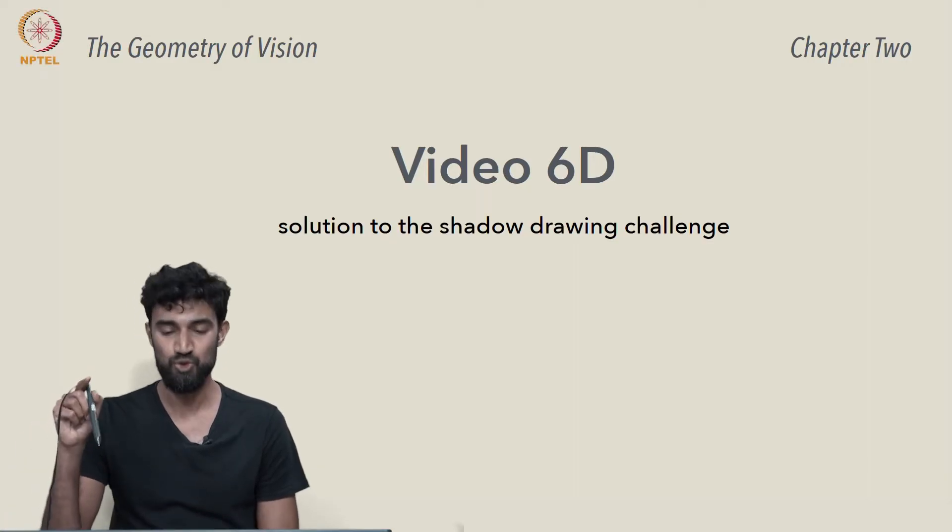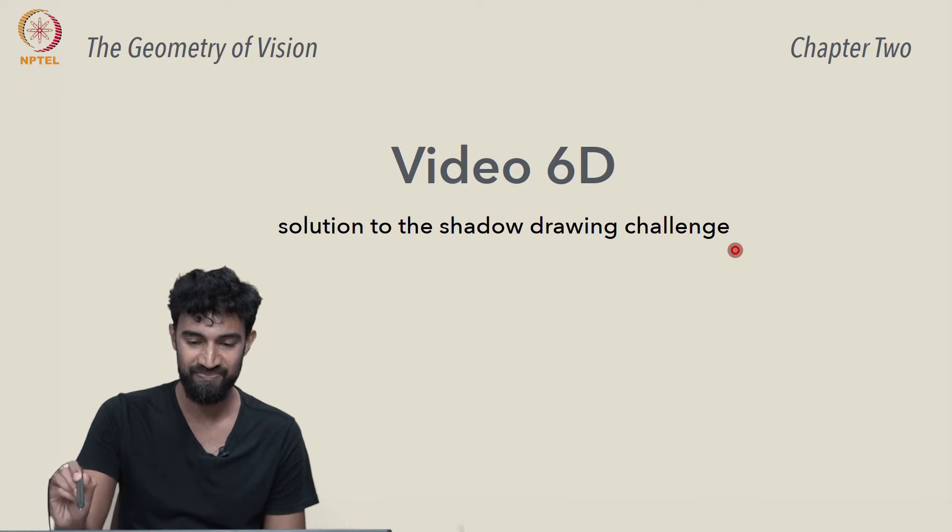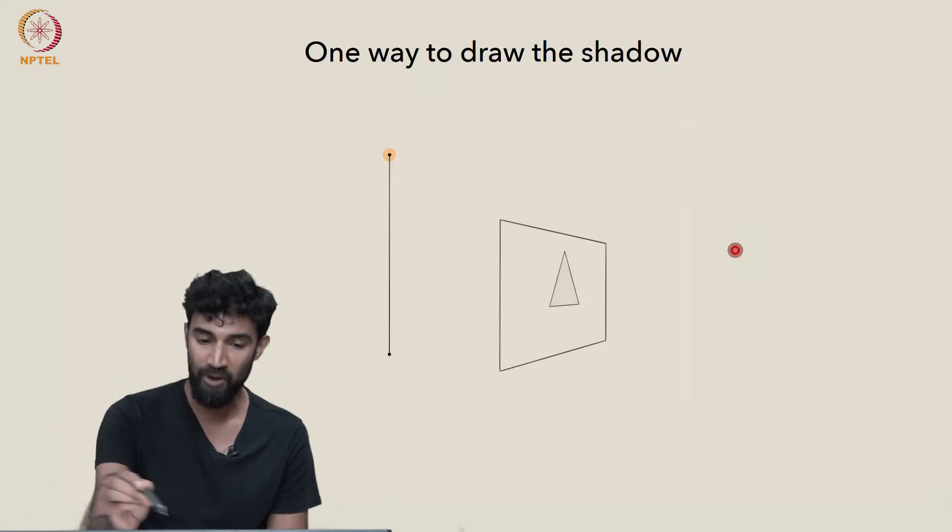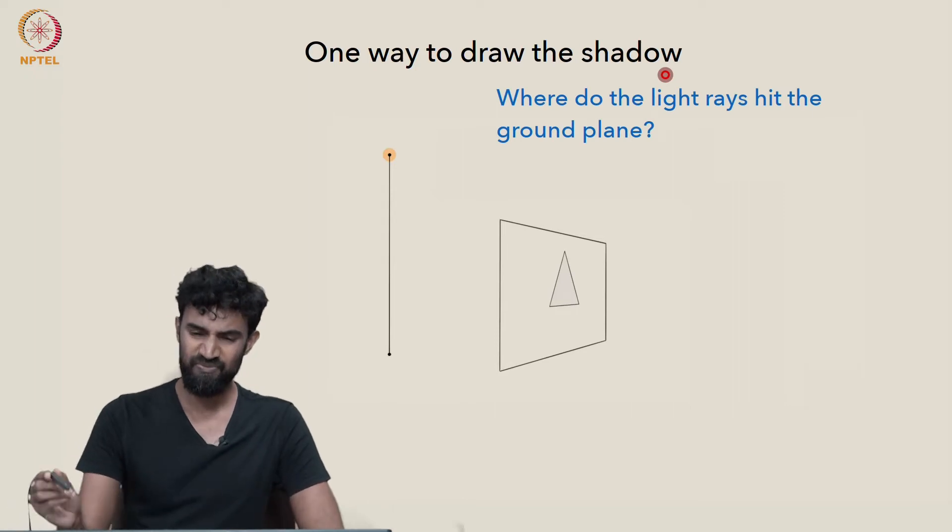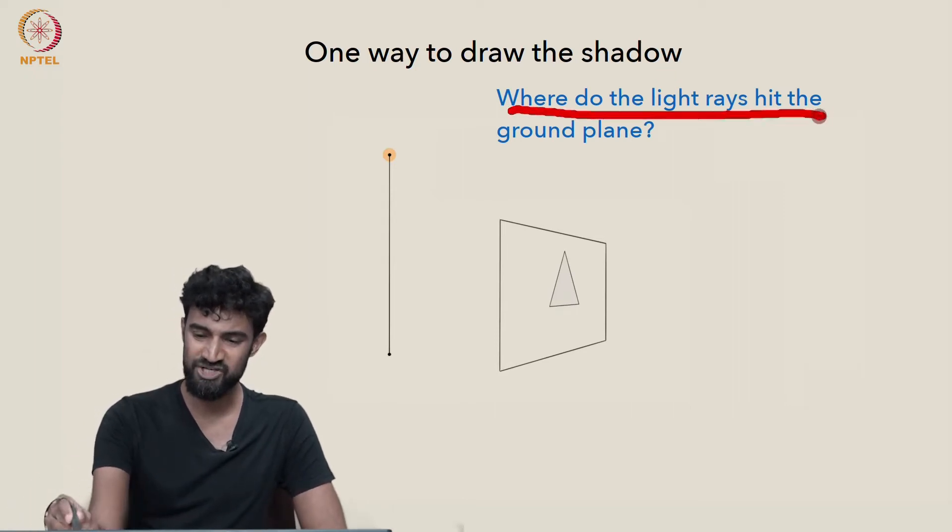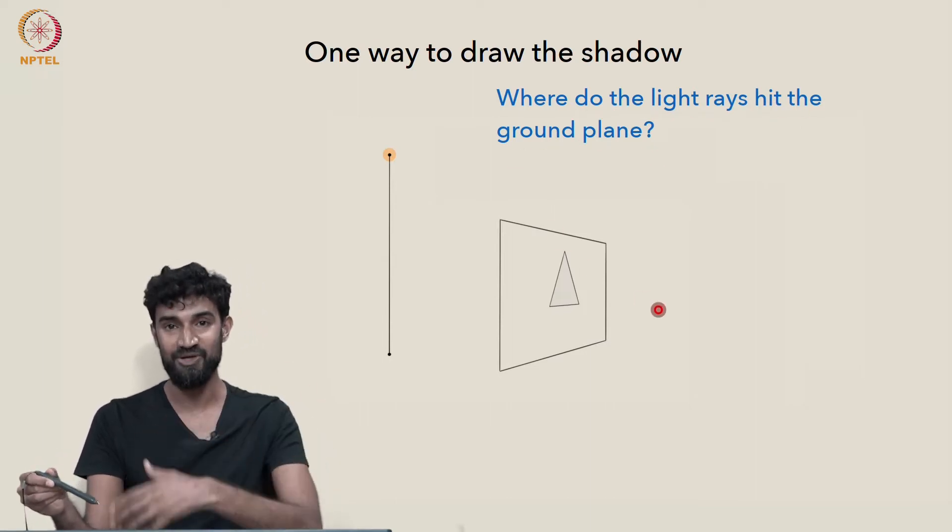Okay, so let's see one solution to the shadow drawing challenge. Here's one way to draw the shadow. So the main question to start with is just where do the light rays hit the ground plane? We can't draw the shadow unless we know where the light rays are hitting the ground plane.